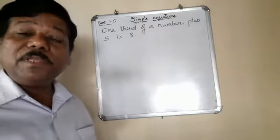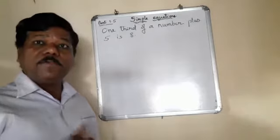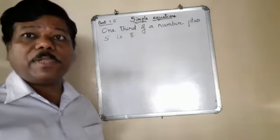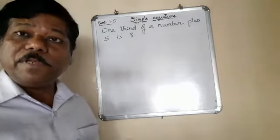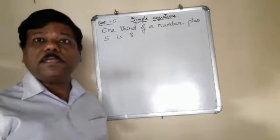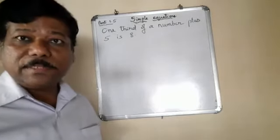The same way, if it is multiplied on the left side, then when it is taken to the right side, it will become divided. And if it is divided on the left side, it becomes multiplied on the right side.